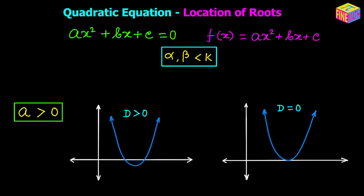For a quadratic equation to have two real roots, the discriminant must be greater than or equal to 0. If the discriminant is negative, we don't have real roots — we have imaginary roots. Since we're talking about two roots being less than a certain real number, those roots also have to be real. So condition number 1 is that the discriminant must be non-negative.